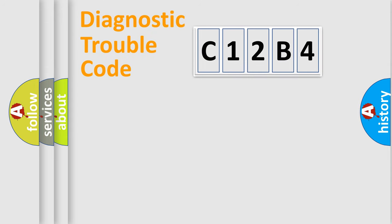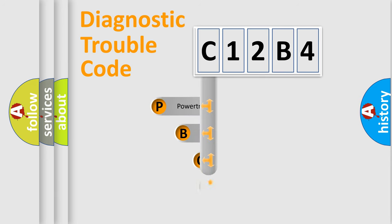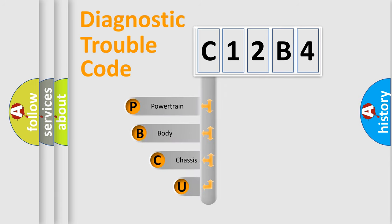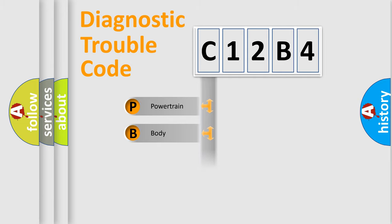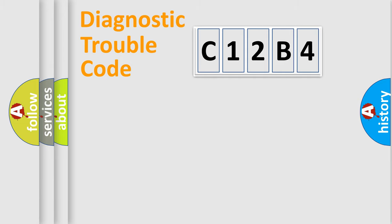Let's look at the history of diagnostic fault code composition according to the OBD2 protocol, which is unified for all automakers since 2000. We divide the electric system of automobile into the four basic units: powertrain, body, chassis, network.